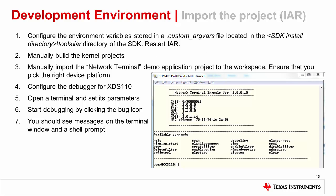Once IAR is installed and licensed, we are ready to work with our first project. First, configure the environment variables. Browse to Tools, Configure Custom Argument Variables, go to the global tab and click import. Choose the custom argvars file located in your SDK installation under tools/IAR, and restart IAR.